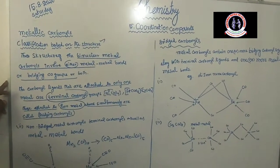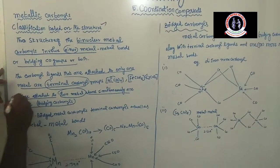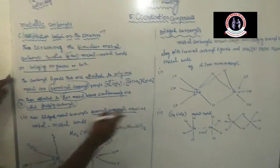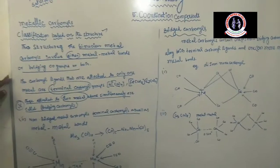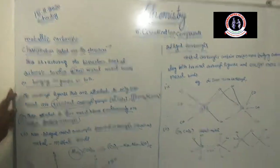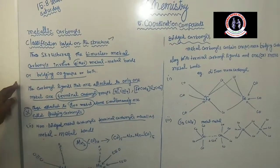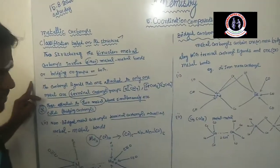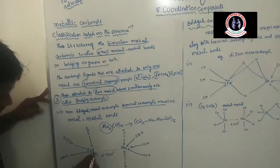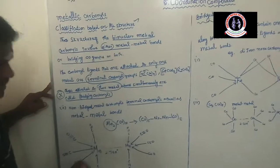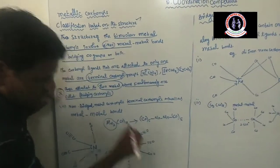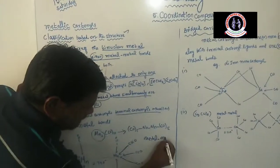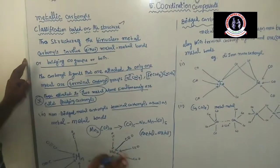Now, very importantly, non-bridged metal carbonyls have terminal carbonyls as well as metal-metal bonds. Here, in decacarbonyl dimanganese, two manganese atoms are present with ten carbonyl groups. Two types of bonds are present: first, a metal-metal bond; and next, a metal-ligand bond.